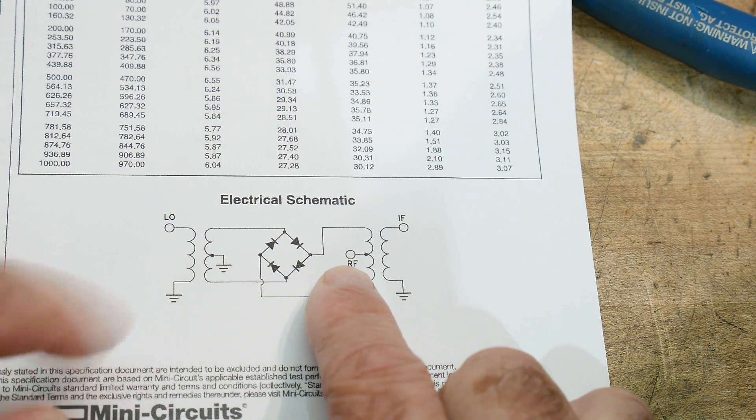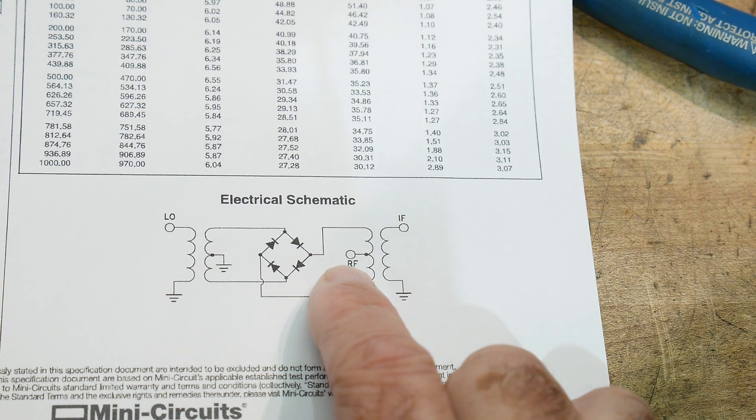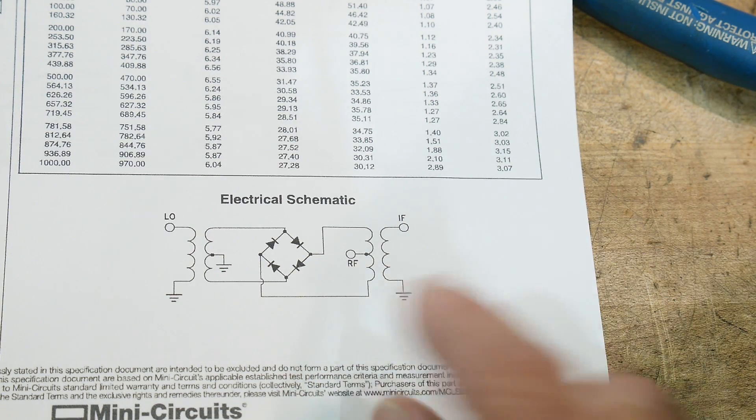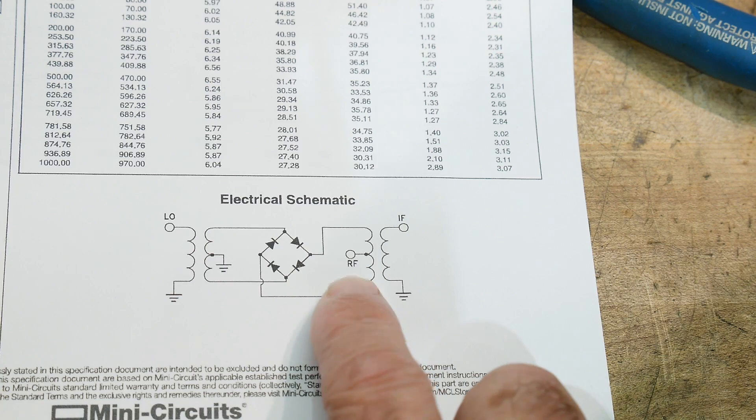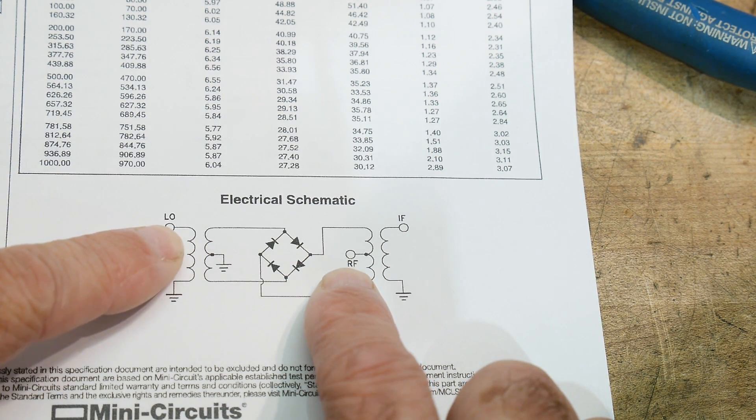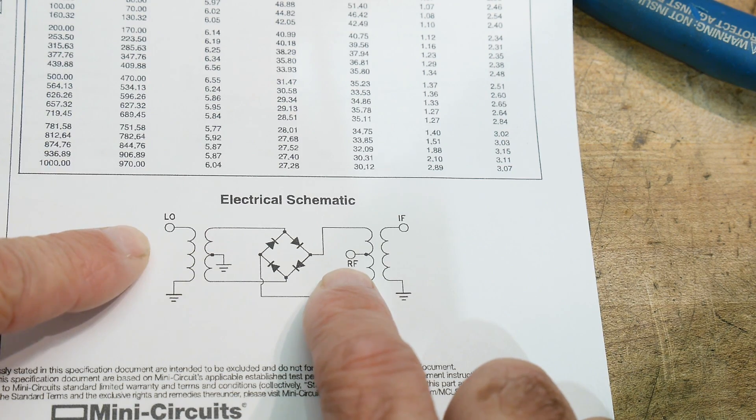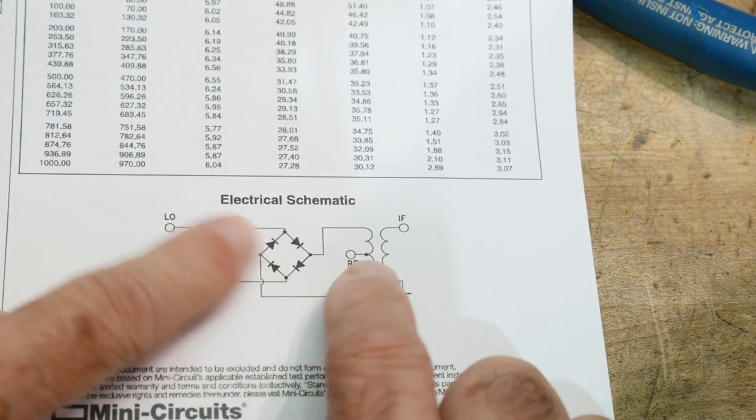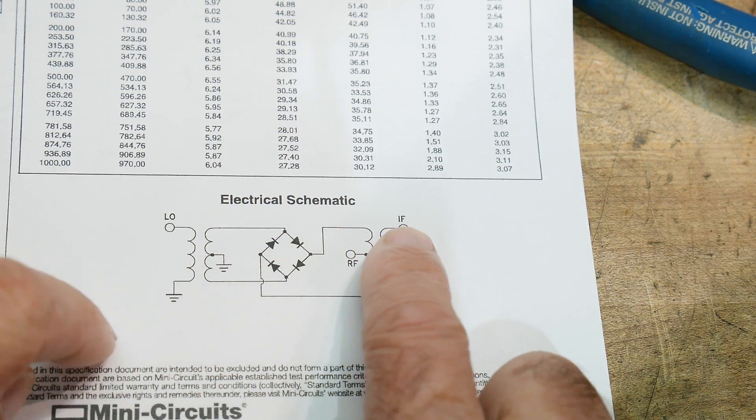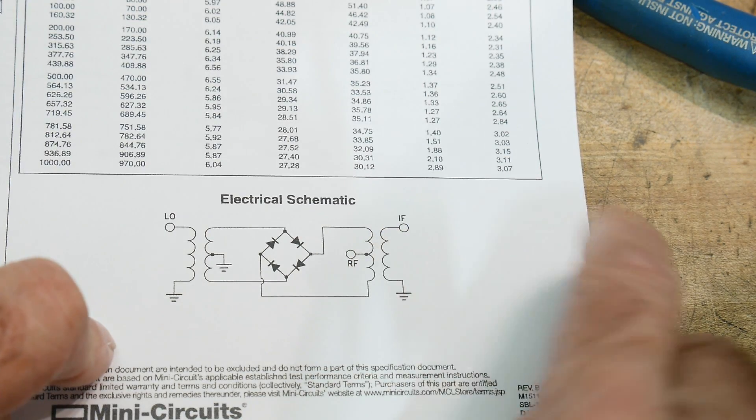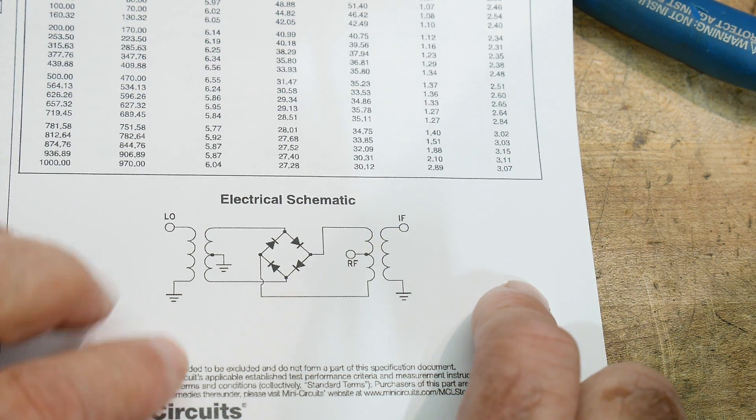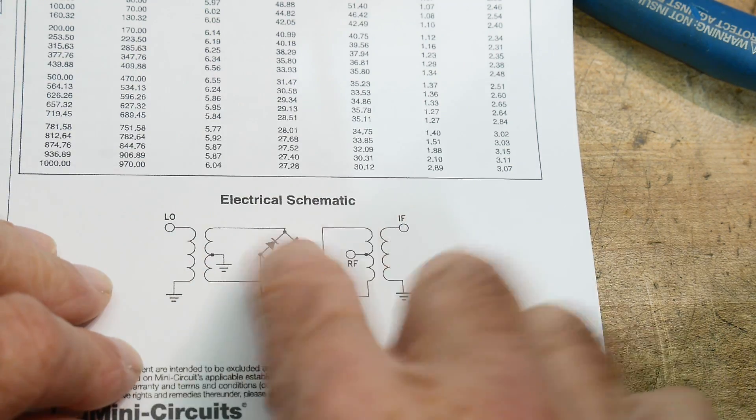Instead of being ground, this transformer instead of being ground reference, it's referenced with another signal. So you have one signal that comes into here into what's called the RF port. You have another signal that comes into LO which is the local oscillator, and those two mix together with this and then they output into an IF frequency, an intermediary frequency.